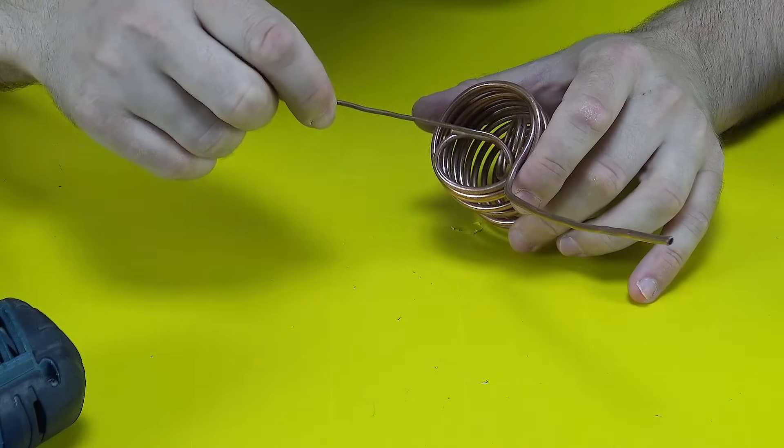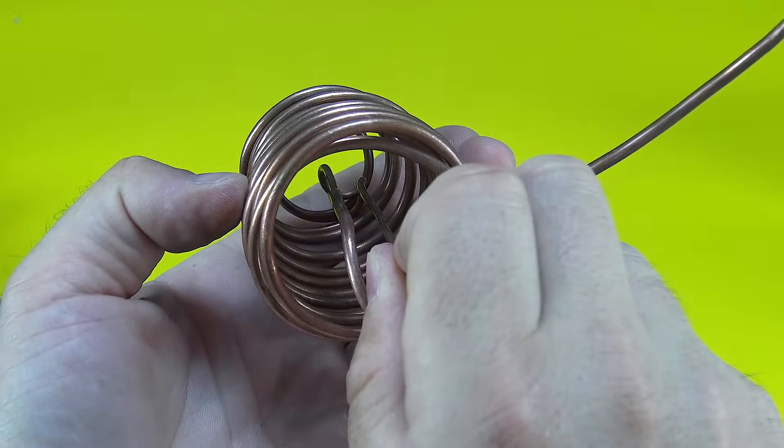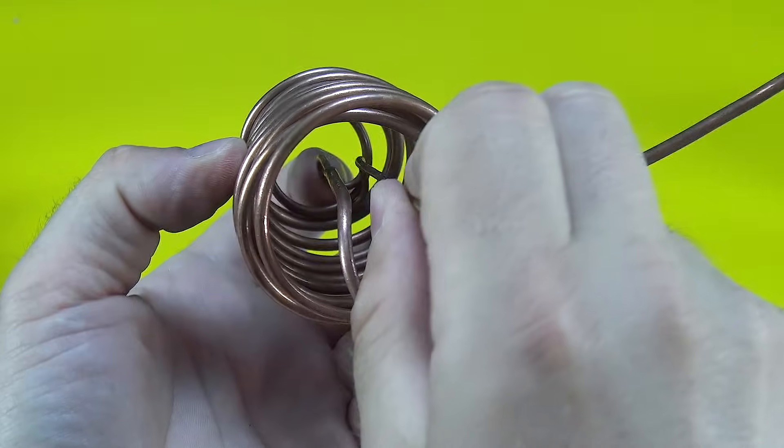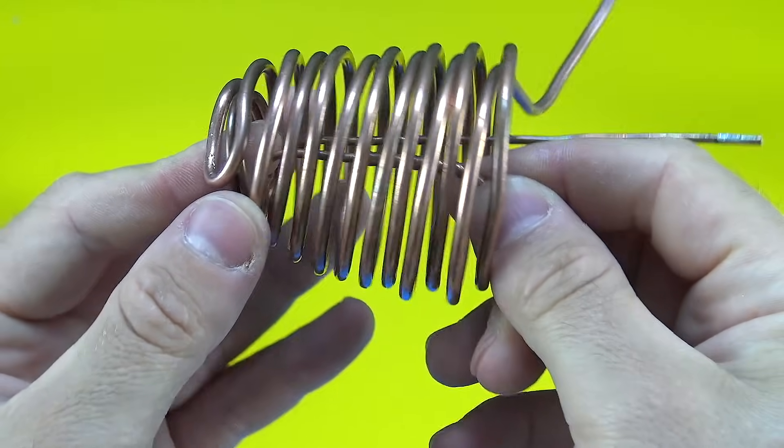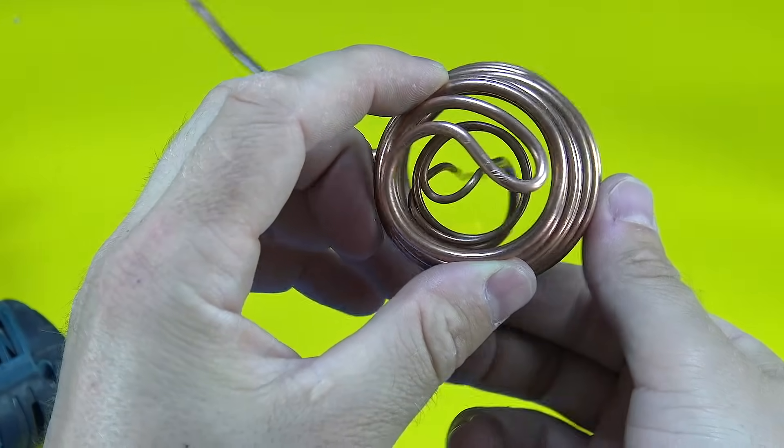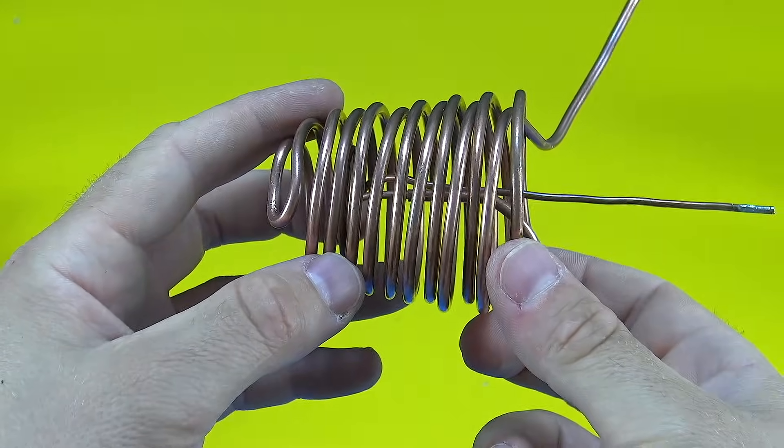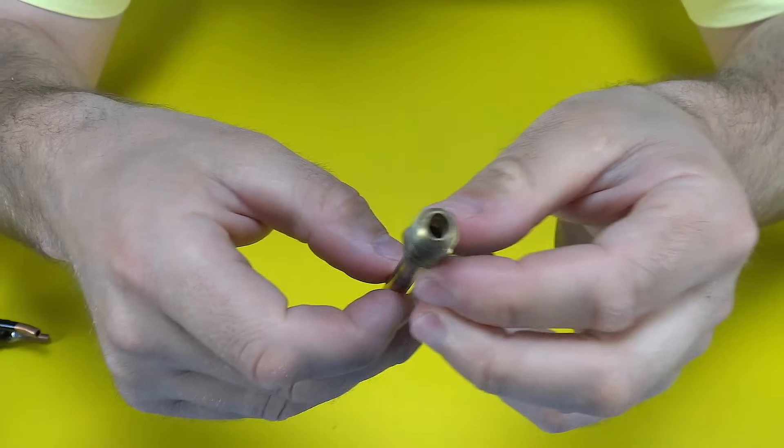To connect the evaporator to the capillary tube, I first had to slightly modify the pipe. I carefully widened its inner diameter using a drill, all to make sure the capillary tube fits tightly and securely inside. This method is simple but quite effective, especially in a home setup.